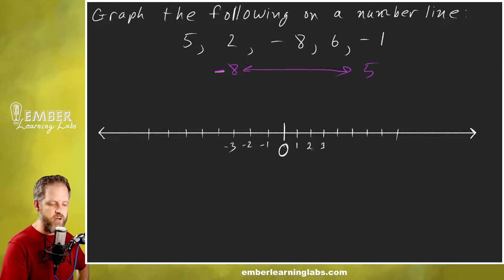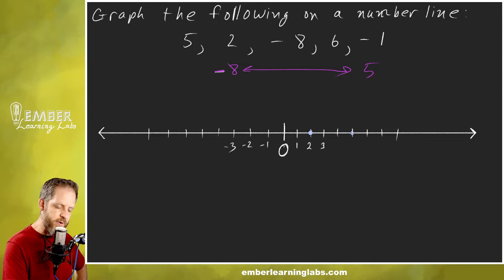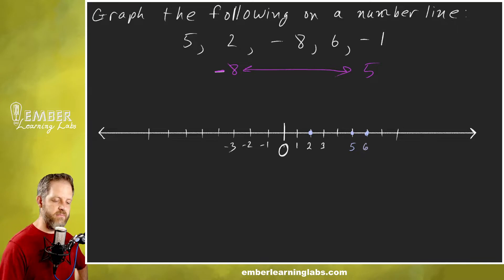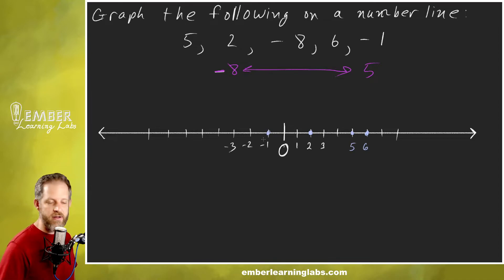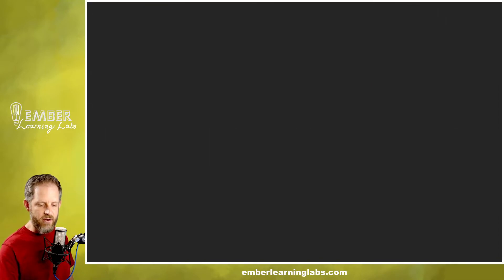Since I'm counting by ones: 1, 2, 3, etc., and then negative 1, negative 2, negative 3. I also like to label the numbers I'm graphing. I'll graph 2 and put a dot right there. I'll graph 5 — three, four, five — put a dot and label it. Then 6, which is right next to the 5. I'll put a dot at negative 1, and then going down to negative 8, I'll label negative 8.